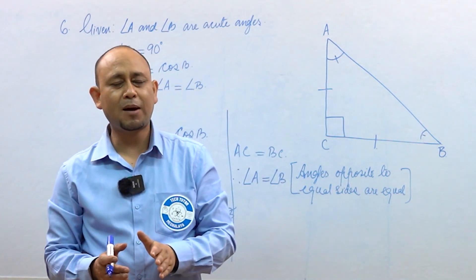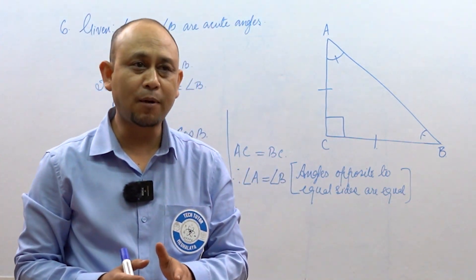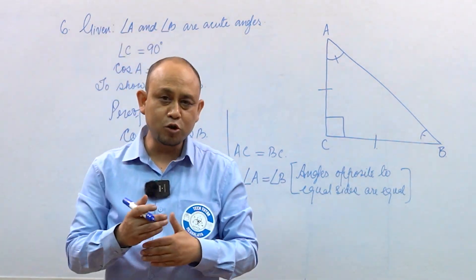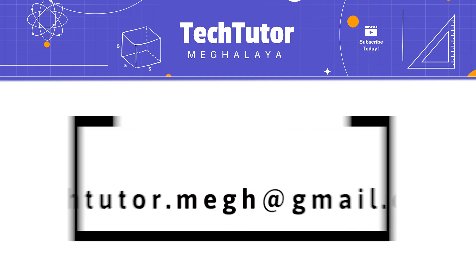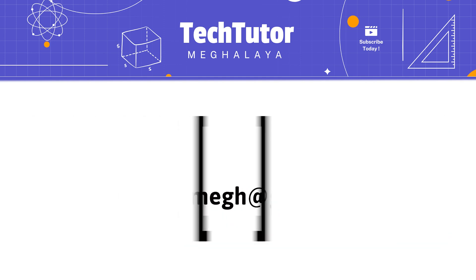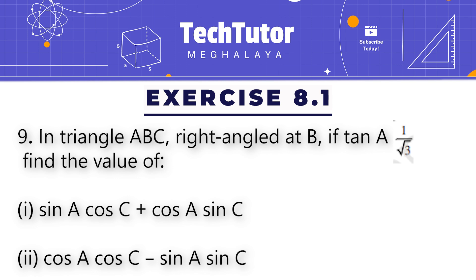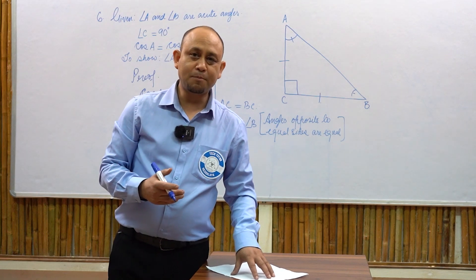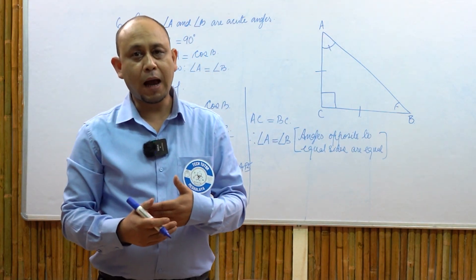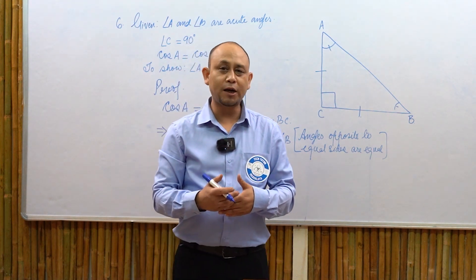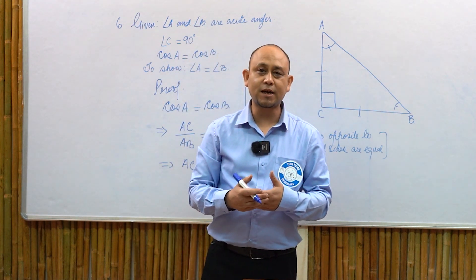If you want to solve question number nine, you can send your solution to techtutor.megh at the rate gmail.com. Question number nine states: in triangle ABC, right angle at B, if tan A is equal to 1 by root 3, find the value of sin A cos C plus cos A sin C. If you want the video for this exercise or the whole chapter, we'll cover exercise 8.2.